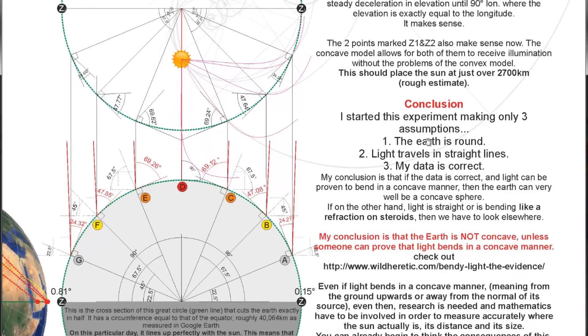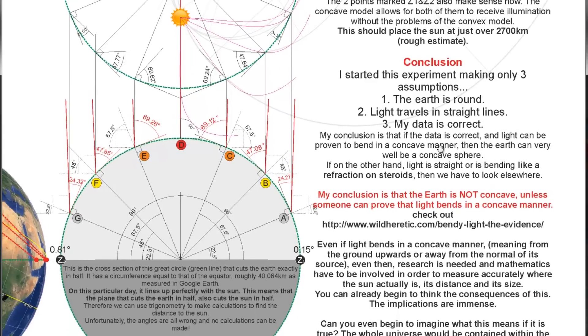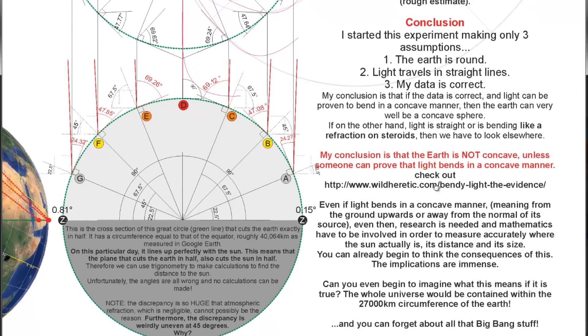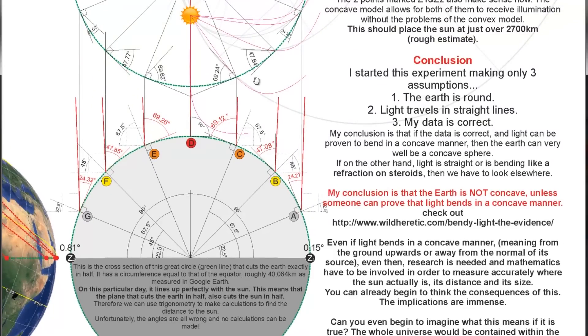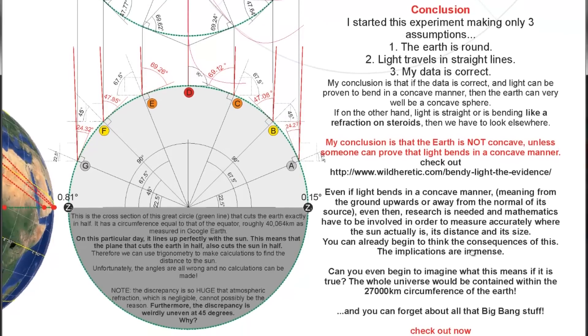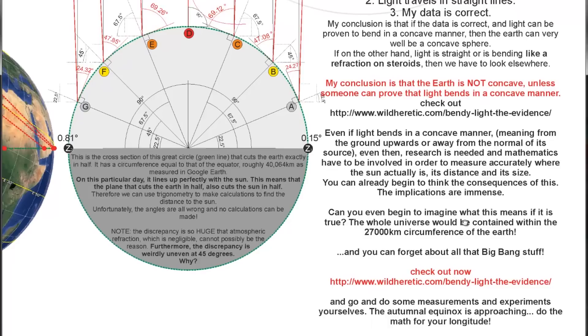So in conclusion, I started this experiment making only three assumptions. The Earth is round, light travels in straight lines, and my data is correct. My conclusion is that if the data is correct and light can be proven to bend in a concave manner, then the Earth can very well be a concave sphere. If, on the other hand, light is straight, or is bending like a refraction on steroids, then we have to look elsewhere. My conclusion is that the Earth is not concave, unless someone can prove that light bends in a concave manner. You can check out this website. Even if light bends in a concave manner, meaning from the ground upwards, or away from the normal of its source, like so, even then, research is needed and mathematics have to be involved in order to measure accurately where the Sun actually is, its distance and its size. You can already begin to think the consequences of this. The implications are immense. Can you even begin to imagine what this means if it is true? The whole universe will be contained within the 27,000 kilometers circumference of the Earth. And you can forget all about that big bang stuff. Go and do some measurements and experiments yourselves. The Autumnal Equinox is approaching. Do the math for your longitude.